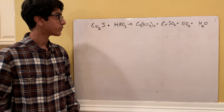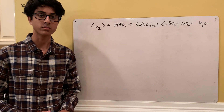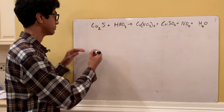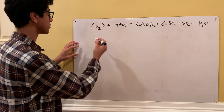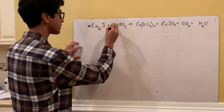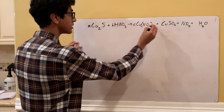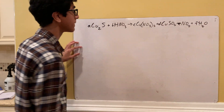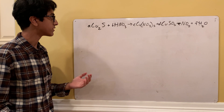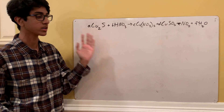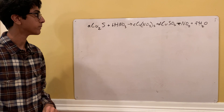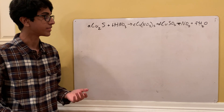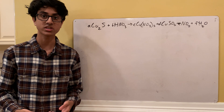First we're going to start off by making a variable for each coefficient. To keep it simple, we're going to go in alphabetical order: A, B, C, D, E, and F. Our goal is to find what all of these variables equal, and then we'll be done.